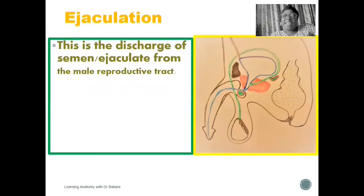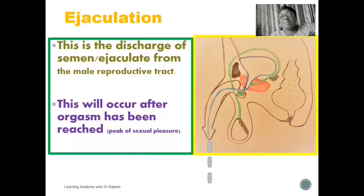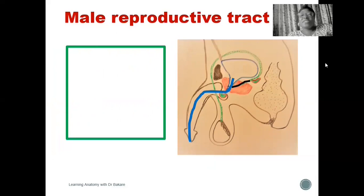Ejaculation can be defined as the discharge of semen or ejaculate from the male reproductive tract. This is the configuration of the male reproductive system. Within the male reproductive system, we have the tract through which the semen or ejaculate will run through before it is finally released out of the body. This will occur after orgasm has been reached, which is the peak of sexual pleasure, and then the process of ejaculation will be initiated.